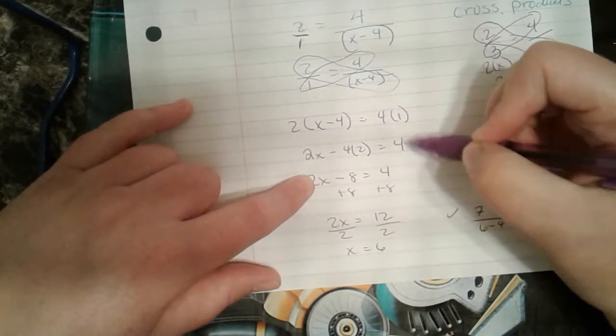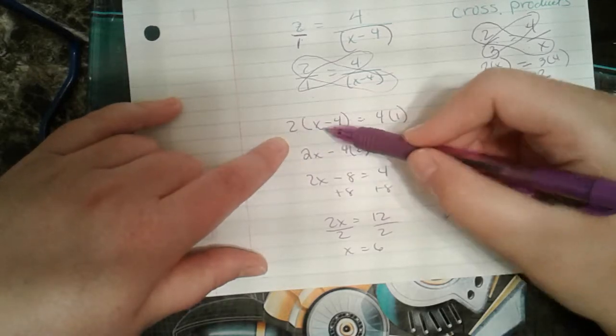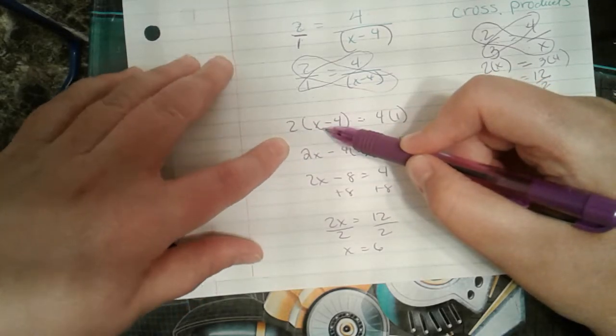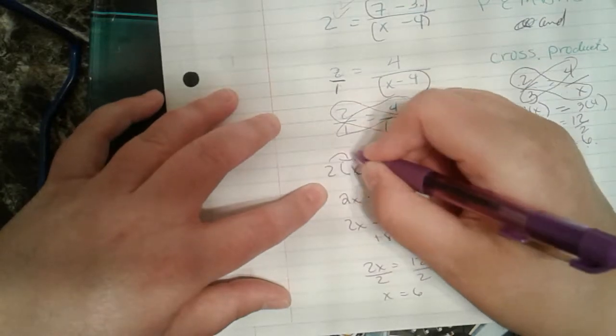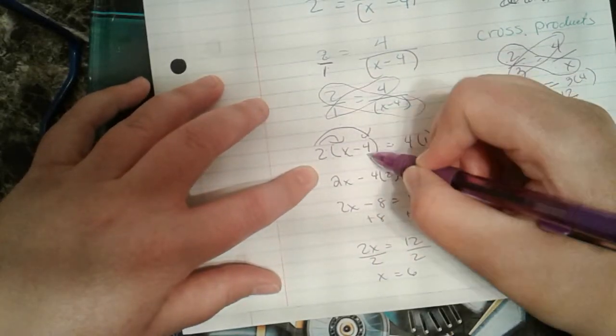So my cross products is 2 times the quantity of x minus 4 equals 4 times 1 because that's my other cross product. So 4 times 1 is 4. And then I look down here. What do I have to do with this 2? If it's on the outside of the parentheses, remember what rule you have to apply there. You have to distribute it.